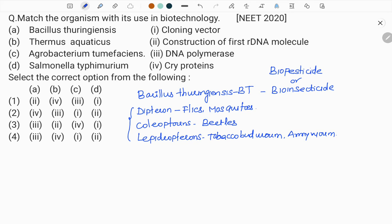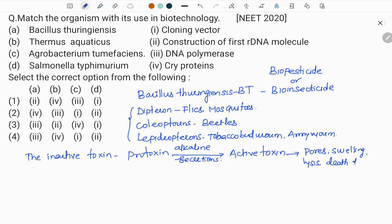The main important point is that when this toxin is produced it is in inactive form called protoxin. When this protoxin is ingested inside the insect, in the gut due to alkaline secretions the protoxin becomes active. This active toxin causes pores, swelling, lysis and at last the death of the insect.